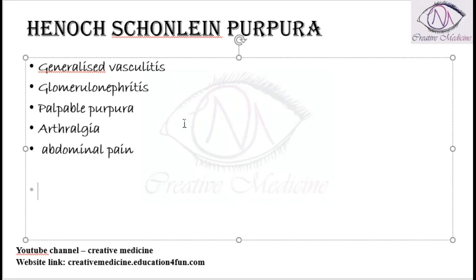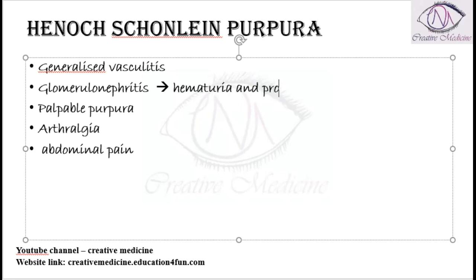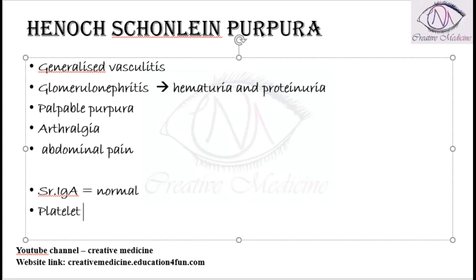In the renal system, the glomerulonephritis which is present is manifested with hematuria and proteinuria in the patient. If you check the serum IgA levels, they will be found to be normal in these patients. Platelet counts will also be normal.